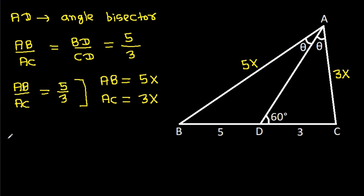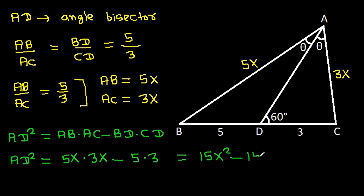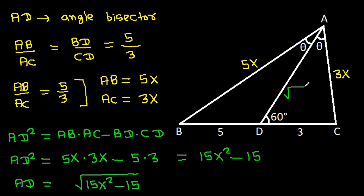Also, AD squared equals AB times AC minus BD times CD. So AD squared equals 5X times 3X minus 5 times 3, which gives 15X² minus 15. Therefore AD equals the square root of 15X² minus 15.